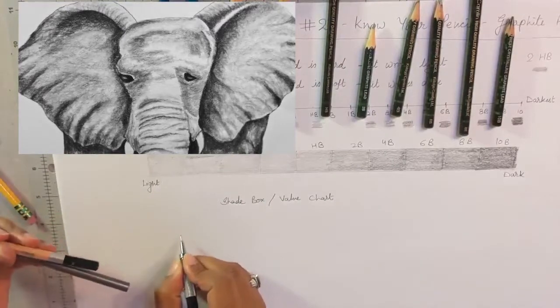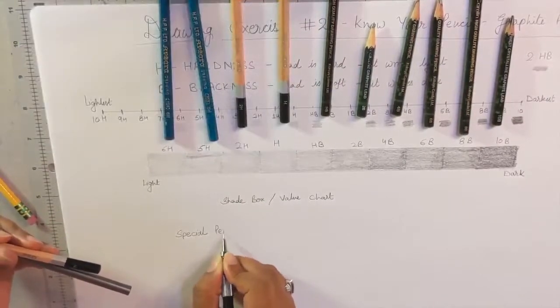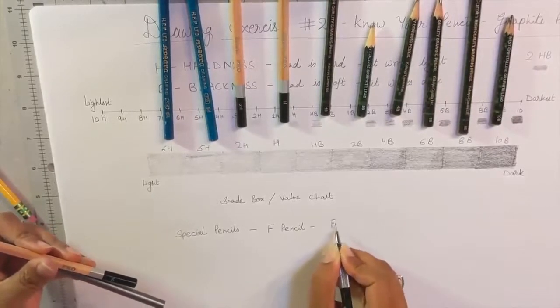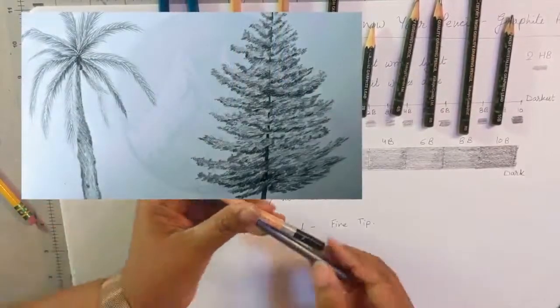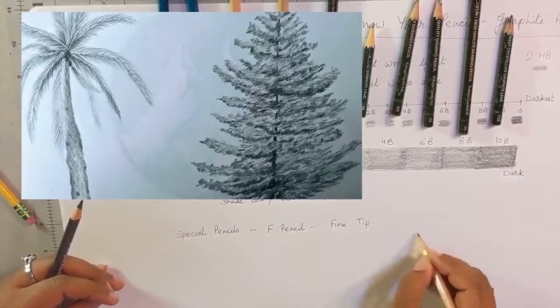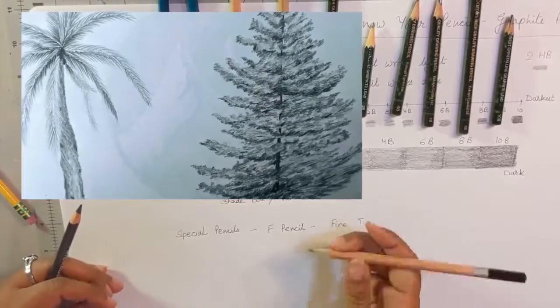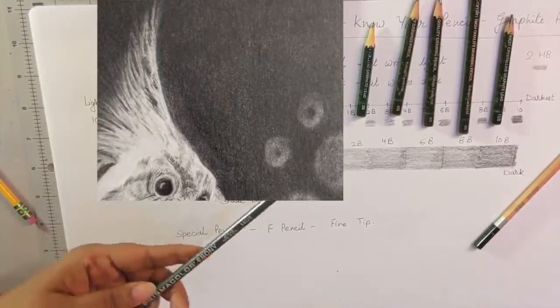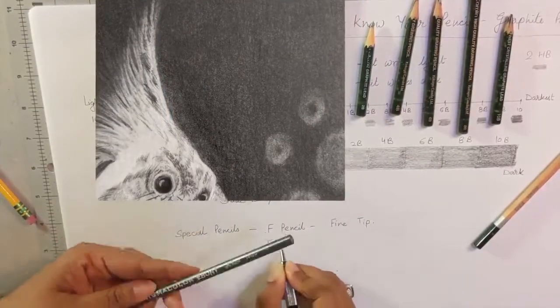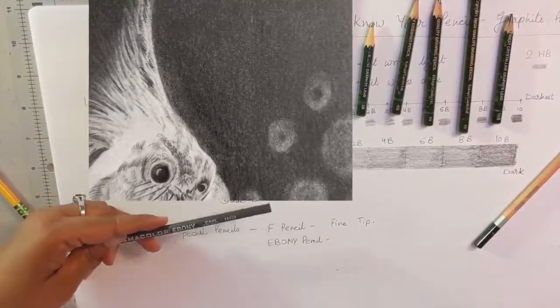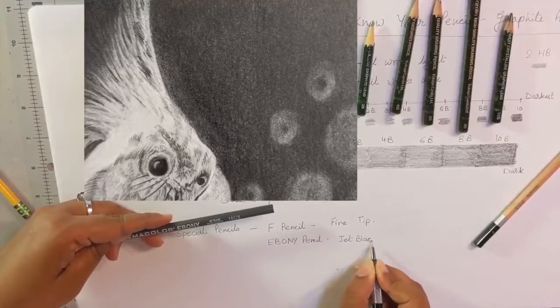But there are two main special pencils. One is the F pencil—F stands for firm, that is for fine tip. To draw like the veins, or like the leaves in this tree, or like the fur in an animal, you use this.